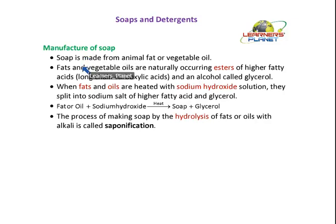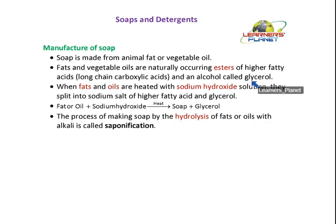Now, how is soap manufactured? Soap is made from animal fats or vegetable oils. Fats and vegetable oils are naturally occurring esters of higher fatty acids and an alcohol called glycerol. I told you in the previous session that when an acid combines with an alcohol, the product formed is an ester. So fats and oils are the esters of fatty acid and glycerol.